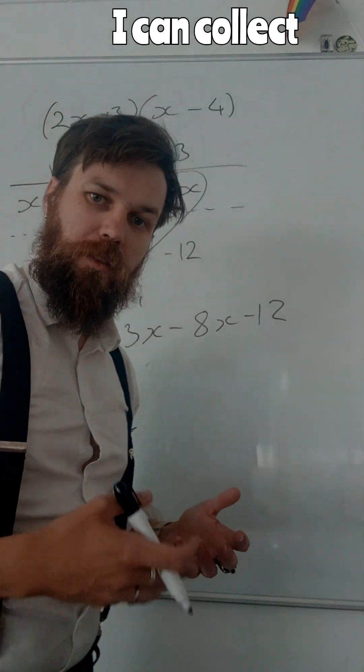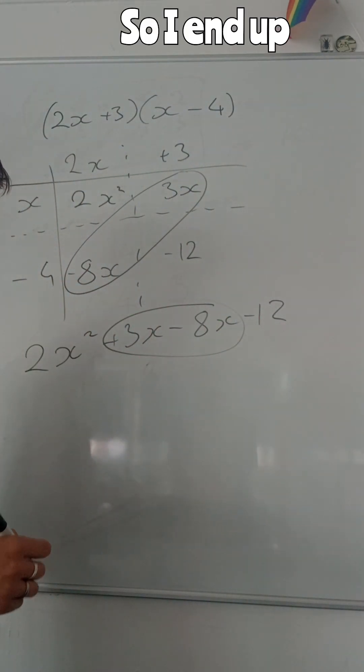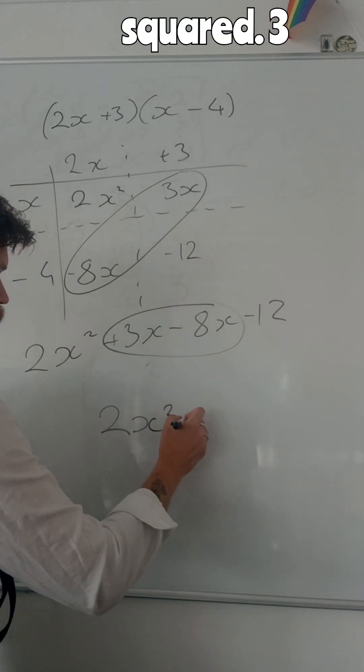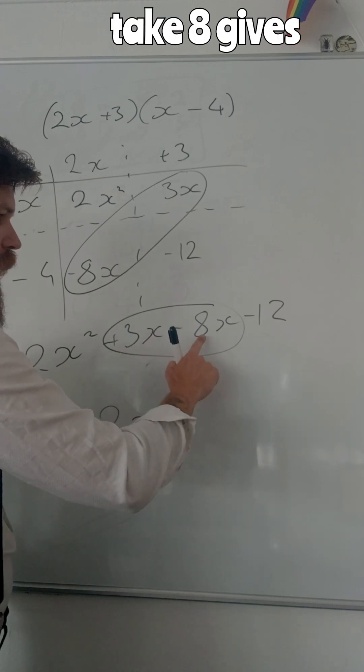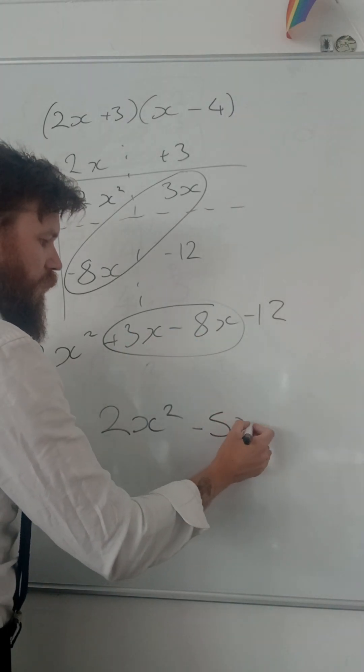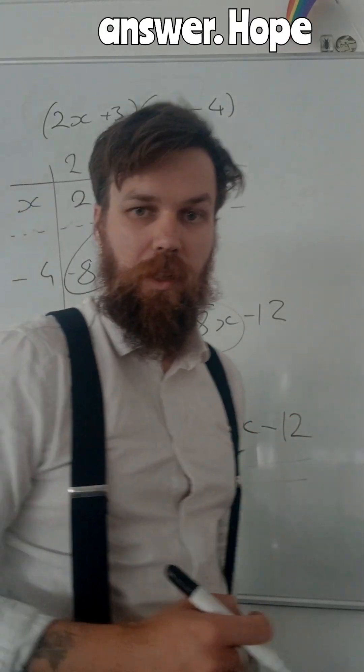What I can do now is I can collect my terms. So I end up with 2x squared. 3 take 8 gives me negative 5x minus 12. And that is my answer.